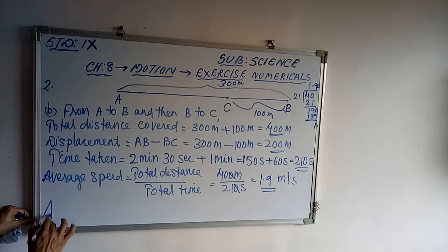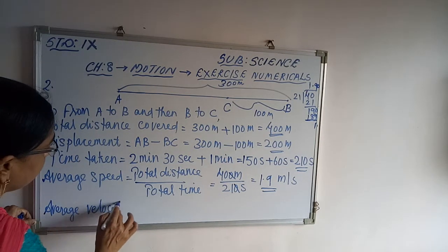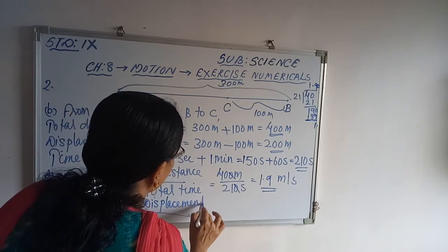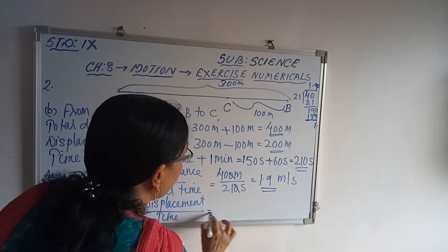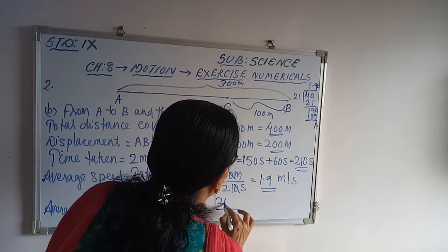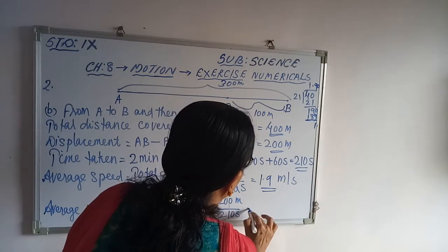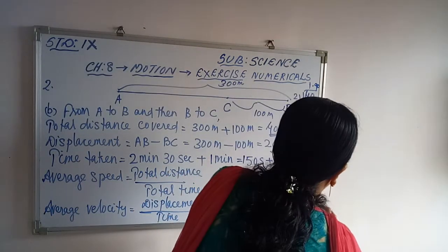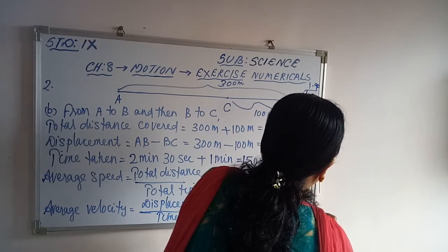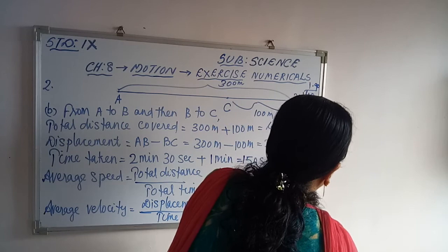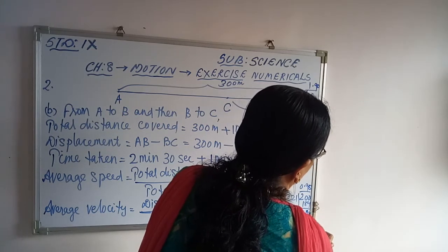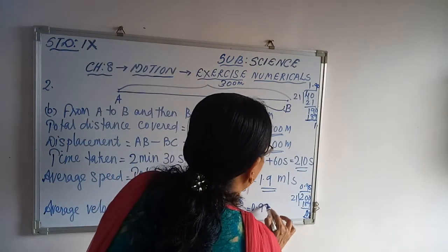Now we can find out average velocity. Average velocity equals displacement upon time. Displacement is 200 meters, time is 210 seconds. That equals 200/210 = 20/21, which gives approximately 0.95 meters per second.